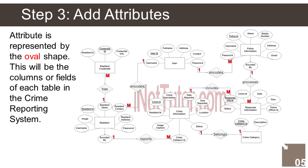The Resident entity has the following attributes: 1. Resident ID — primary key, represented with underline, 2. Resident name, 3. Resident contact, 4. Resident address, 5. Image, 6. Username, 7. Password, 8. Encoded by — foreign key.